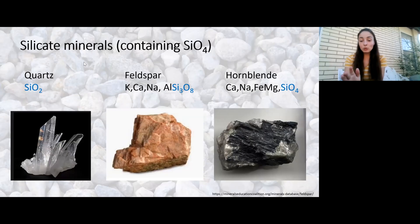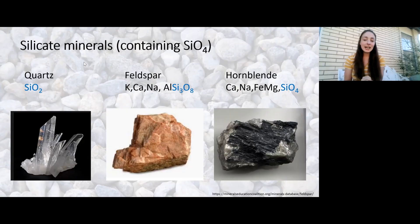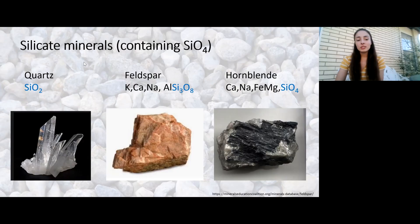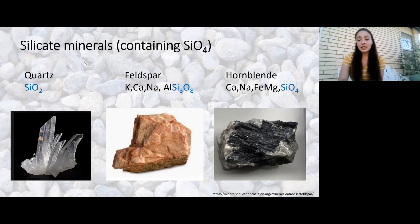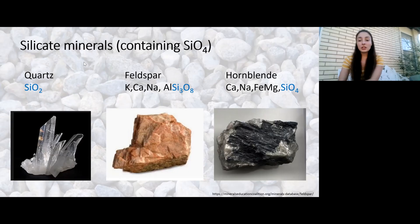Silicate minerals are minerals that contain silica. Silica is SiO4 — a silicon atom with four oxygens bonded to it — and this is what all silicate minerals contain. Quartz is basically all silica. Feldspar contains some other elements plus silica. Hornblende also contains silica. These minerals are very abundant in Earth's crust and all contain silica, making them silicate minerals.